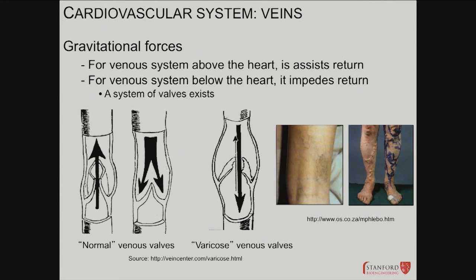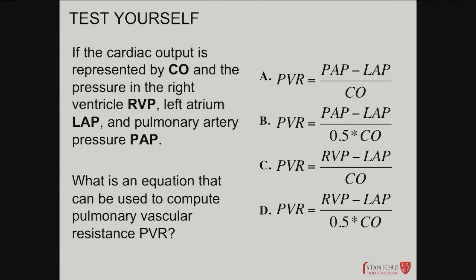Valve incompetence leads to varicose veins — those large bulky vessels you can see. It's not common to see severe cases, but many people have varicose veins. You can use mechanical compression stockings that push and add extra flow, preventing more blood from pooling by applying added pressure from outside.